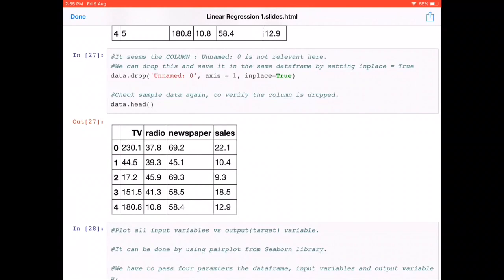Then we check the sample data again. Keep this in mind: whenever you do some kind of data manipulation, always keep checking your data frames. Here we see that our unnamed column is gone now and the same records still stay.